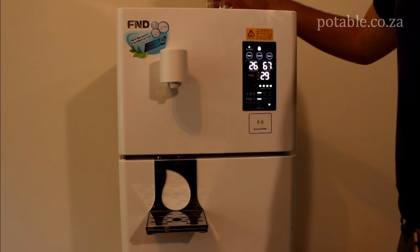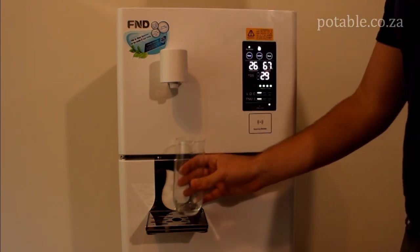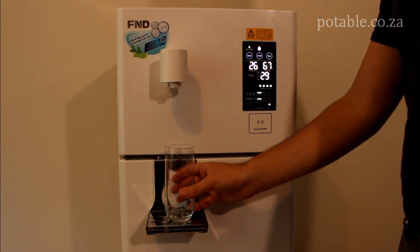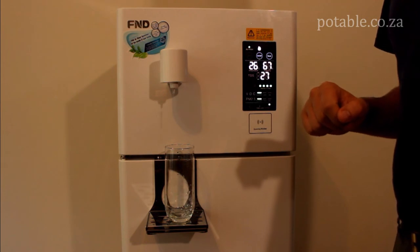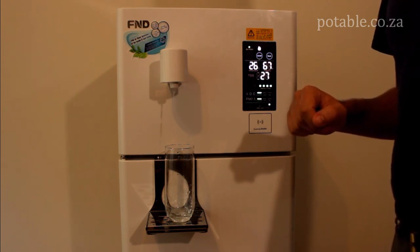Once there is water in the tank it is very easy to get water from the unit. All you simply do is place your glass on the section provided. Push the water button and in roughly two seconds water will begin to release from the dispensing unit.